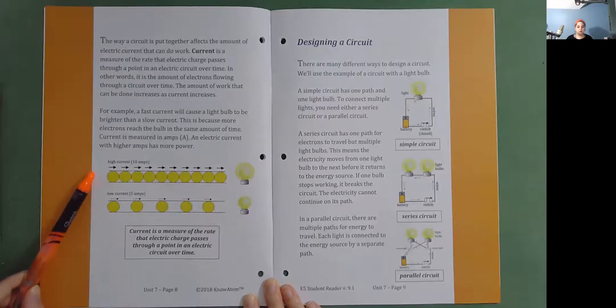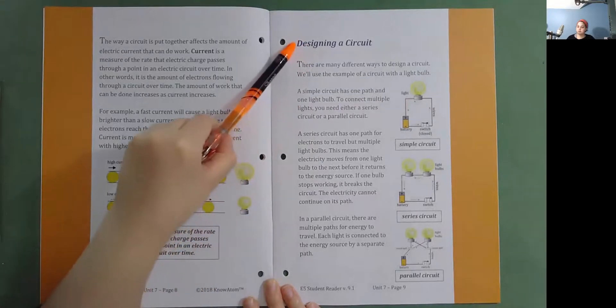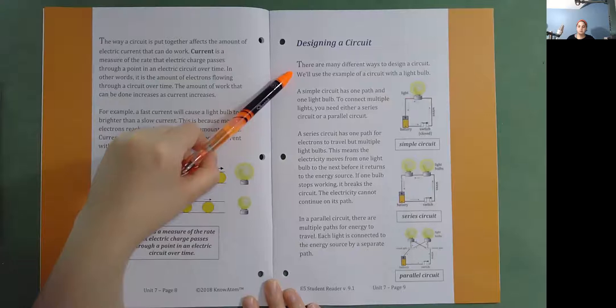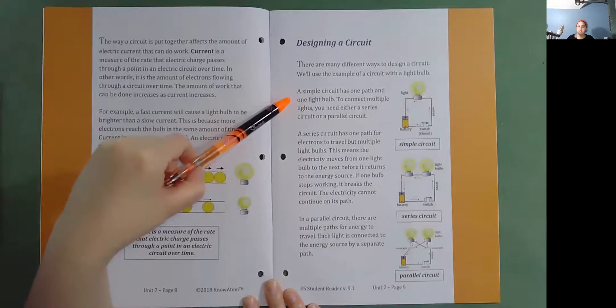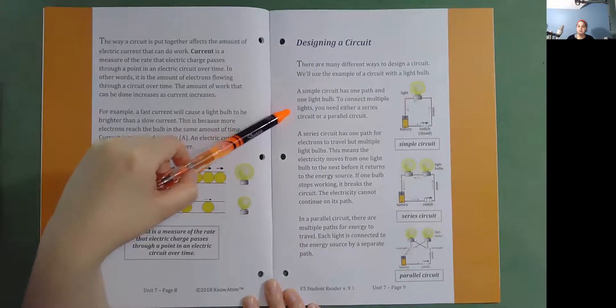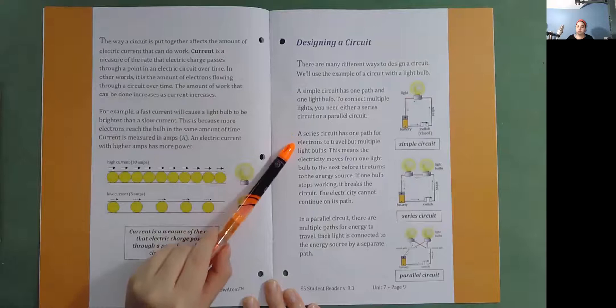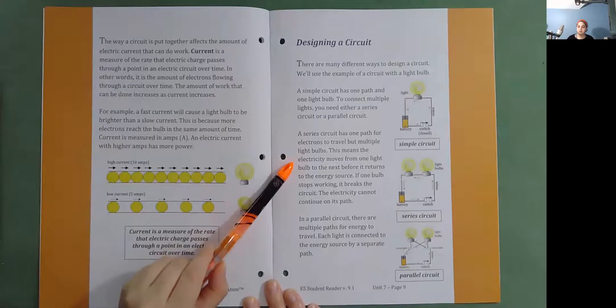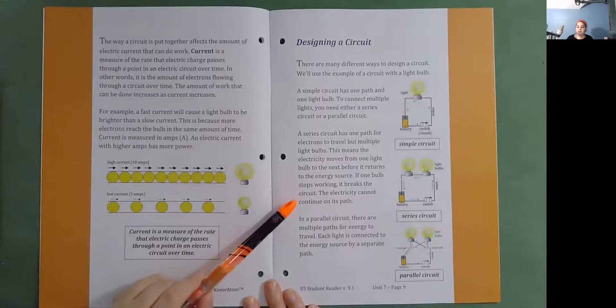Here's a high current and a low current. Designing a circuit. There are many different ways to design a circuit. We'll use the example of a circuit with a light bulb. A simple circuit has one path and one light bulb. To connect multiple lights, you need either a series circuit or a parallel circuit. A series circuit has one path for electrons to travel but multiple light bulbs. This means the electricity moves from one light bulb to the next before it returns to the energy source. If one bulb stops working, it breaks the circuit. The electricity cannot continue on its path.